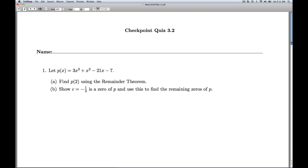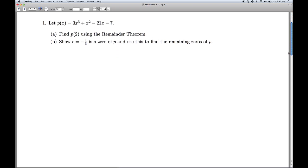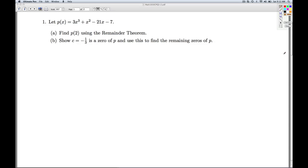Hi folks, this is College Algebra Checkpoint Quiz 3.2. We're given a polynomial, and in Part A we're asked to find p of 2 using the remainder theorem. So what does that mean to do?